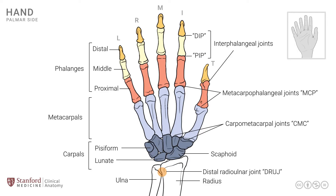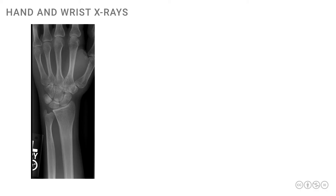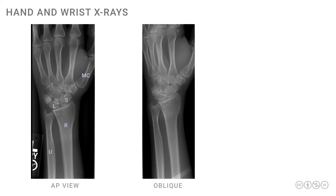Let's now look at a simple x-ray of the hand and wrist joint. These are primarily focused on the wrist but include a little bit of the hand as well. In this first x-ray, which is an AP or anterior-posterior view, the distal ends of the radius and ulna are labeled as R and U. We can also see the base of the metacarpals. The carpal bones are visible, and the scaphoid is labeled with an S. The lunate bone, which is adjacent to the scaphoid, is also shown. We can also look at an oblique view — not quite an AP and not quite a lateral — where most of the same bones are visible.